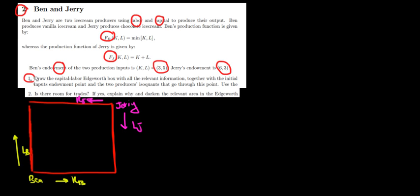The questions are: what is the Edgeworth box, and is there room for trade? Let's do these together because they go hand in hand. First, we must understand the actual production function. In Ben's case, we have the minimum function — perfect complements — meaning Ben needs the same amount of capital and labor, and any extra is unnecessary.